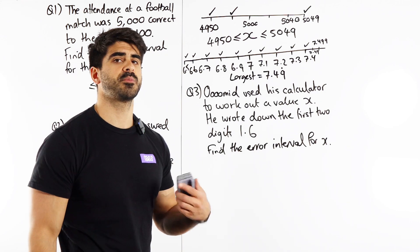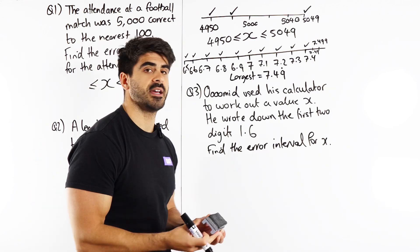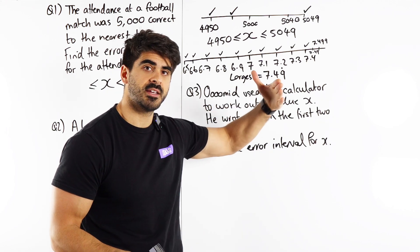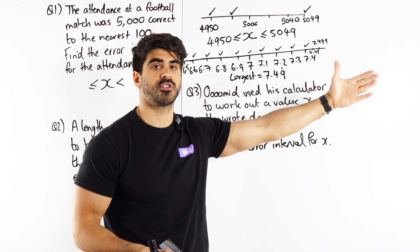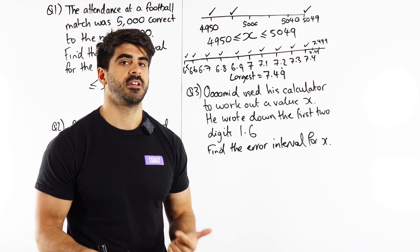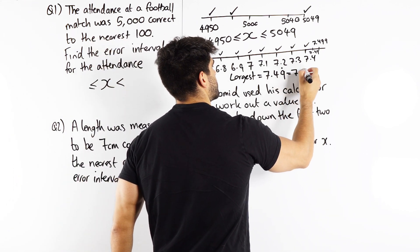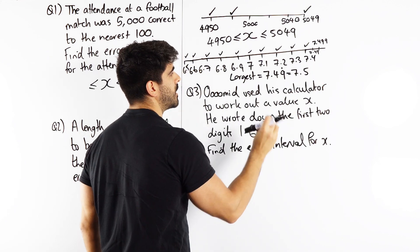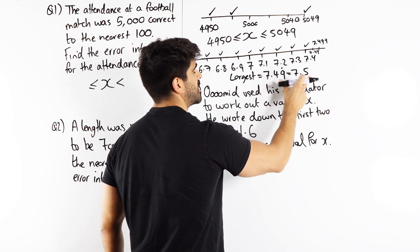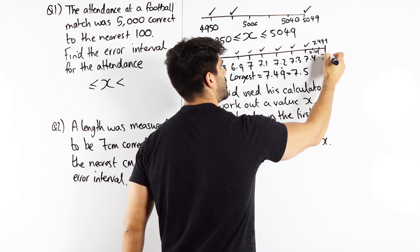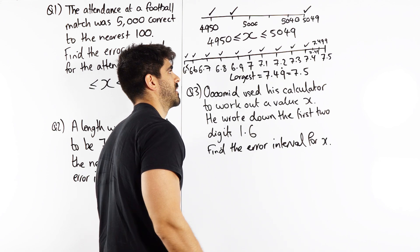But guys, if you were to put this in a calculator, get your calculator, do 7.4, keep pressing 9 until the 9s go off the screen. What does it give you? It gives you 7.5. Because mathematically, there is no number in between these two numbers, so they must be the same. So actually, the upper bound, we say is 7.5.